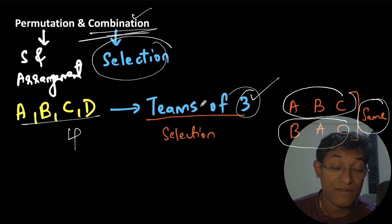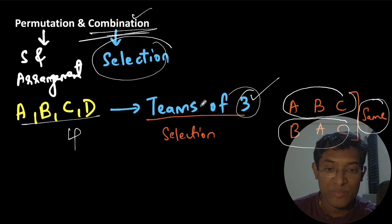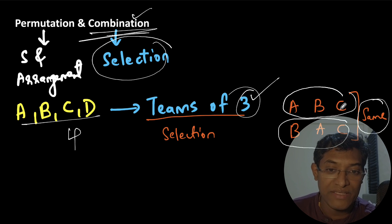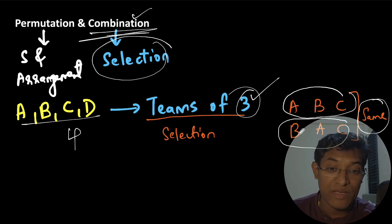We use combination here because A, B, C is the same team as B, A, C. The meaning of combination is just selection — the ways in which you can select three people out of four people. We are interested in strong fundamentals, not just the formula and the answer.